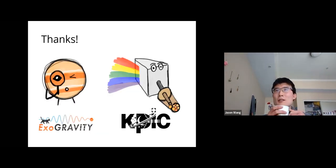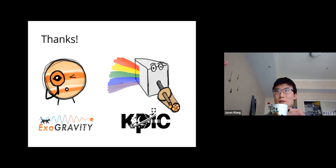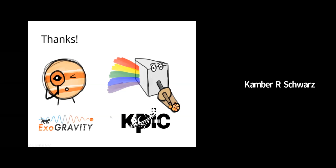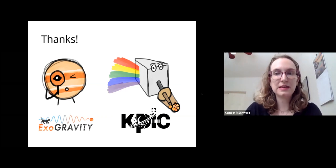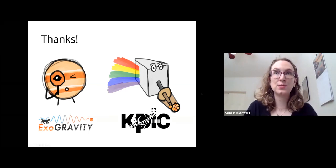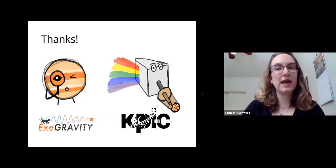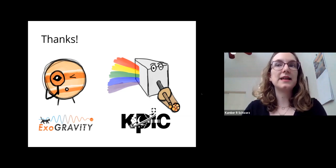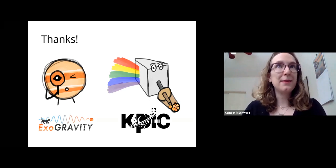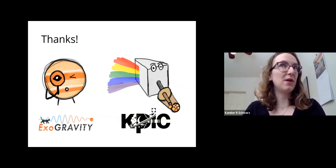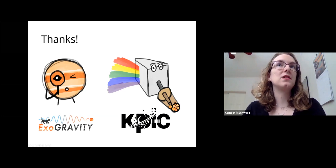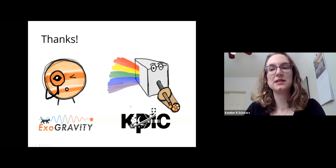That's basically everything. I'm happy to take any questions. The first question from the chat asks: what spectral features drive the log g difference between HR 8799e versus b, c, and d in the KPIC fits?